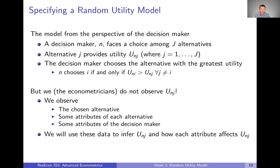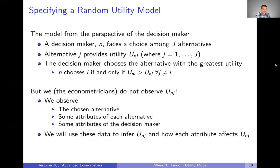So how do we actually specify the random utility model? Let's get a little more formal. The model from the perspective of the decision maker is that decision maker n — we're going to have multiple decision makers in our data typically, but we start by thinking about one, which we call lowercase n — they're going to face a choice among capital J alternatives. Each alternative, lowercase j, is going to provide utility capital U, subscripted nj, meaning the utility for decision maker n from alternative j. For each decision maker we have a utility value for all capital J alternatives. The decision maker chooses the alternative with the greatest utility: n chooses i if and only if U_ni is greater than U_nj for all j not equal to i.